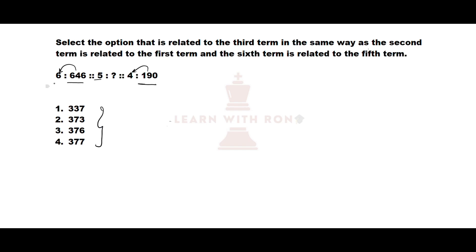First, observe the first two numbers which are 6 and 646 here. What is the mathematical operation I can do on the small number to get the big number? It's either square or cube and so on. If I do the cube of the first number — 6 cubed is nothing but 216.